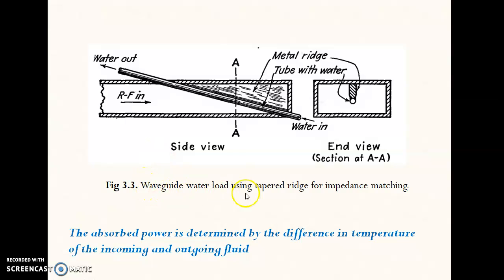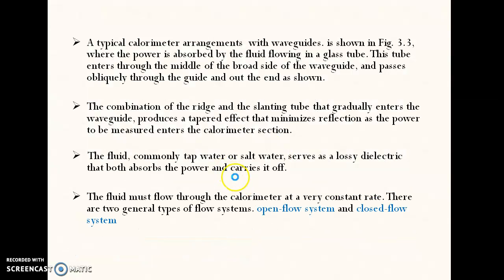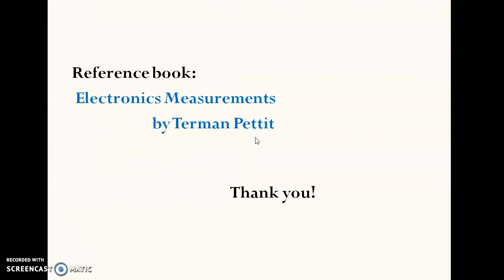Another arrangement of the calorimeter method is in a waveguide. One tube has been used where the fluid will flow, and the RF input power — the same principle will be used here also — the fluid in the tube will absorb the power and we can measure the temperature difference of the water in and the water out in this section as well. This arrangement is actually for a waveguide, not for a coaxial cable. You can refer to this book for further details. Thank you, and we will meet for another lecture.